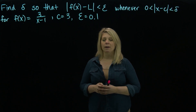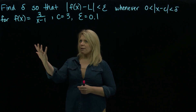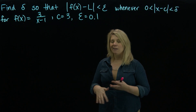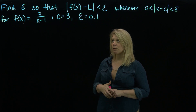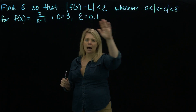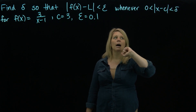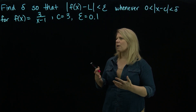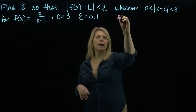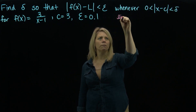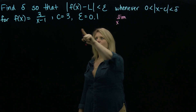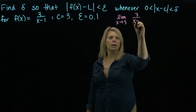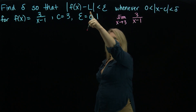We're going to look at a more challenging problem where we find a delta for a specific function near a specific point and for a given epsilon value. From the definition of limit, we've been given a function, a c value, and an epsilon. Translating to familiar notation, we're considering the limit as x approaches c=3 of f(x) = 3/(x−1), and whatever this limit equals is our L.